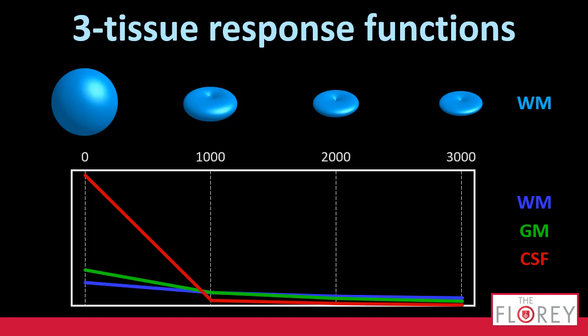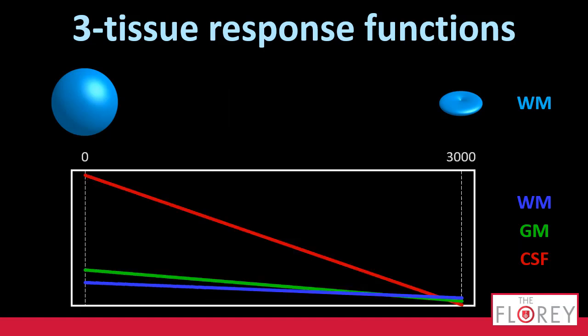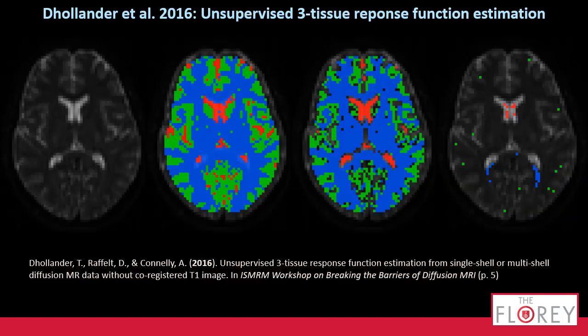For instance, for multi-shell data, the white matter is an anisotropic response function. Gray matter and the CSF are isotropic, and they all feature signal decay. If this were to be single-shell data, we may only have a single non-B0 value, and then they look like this.